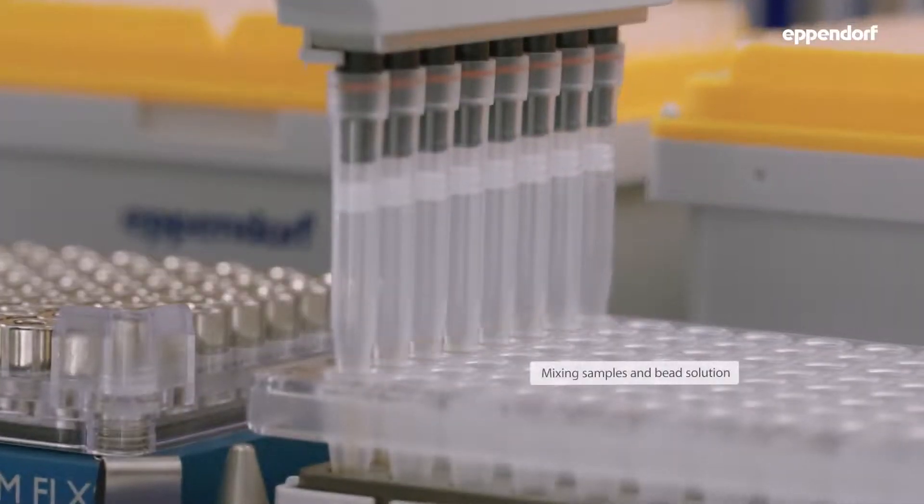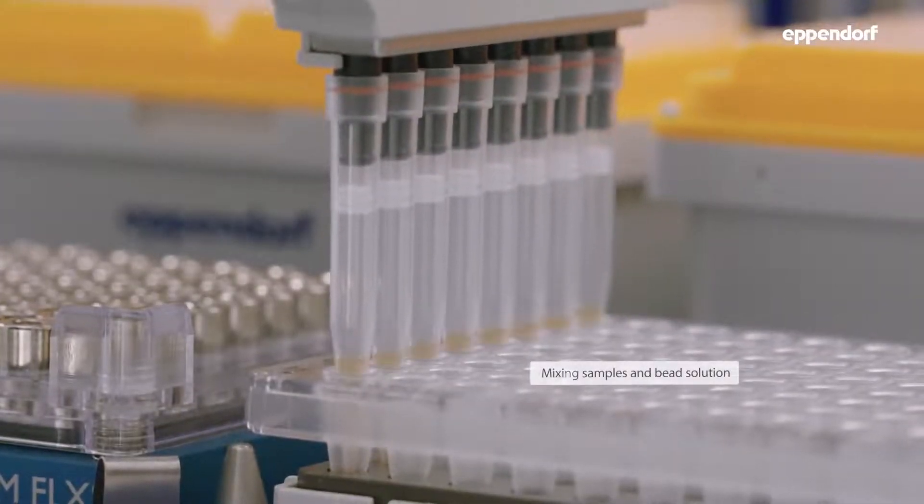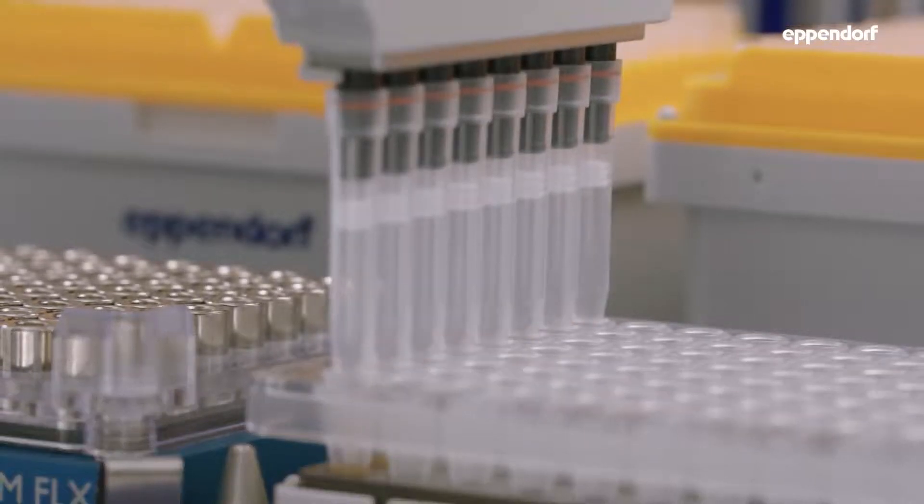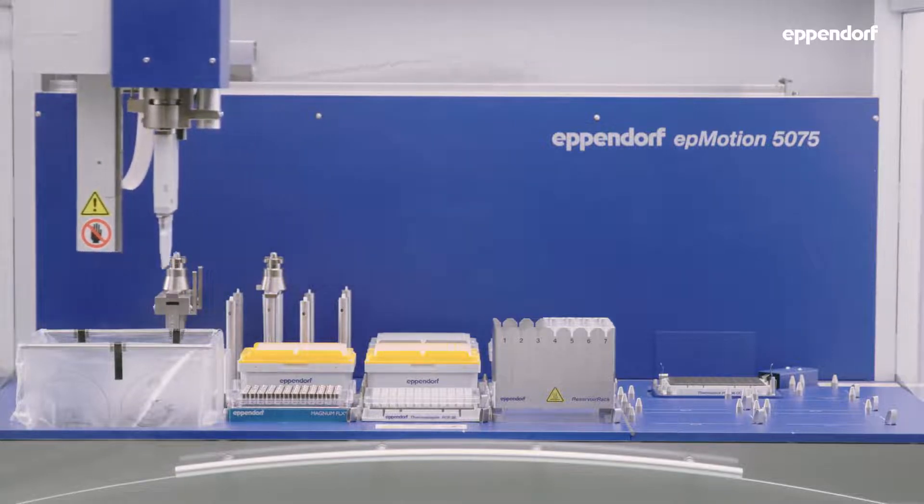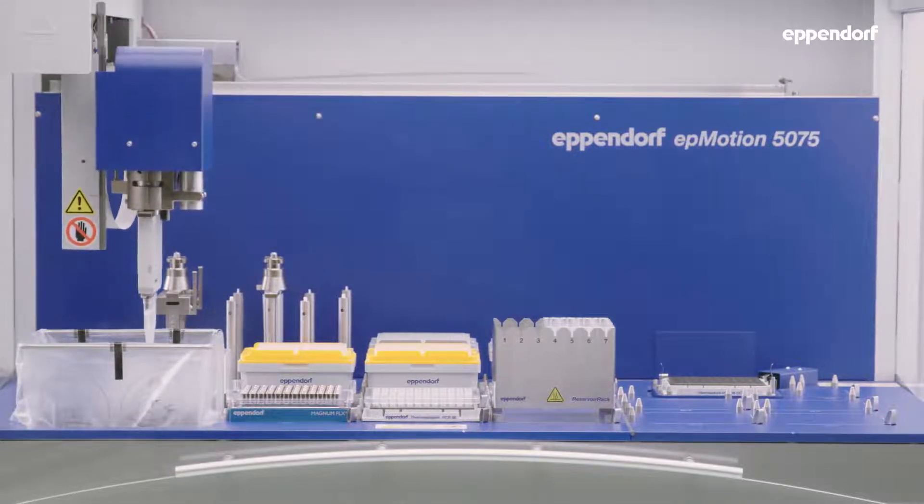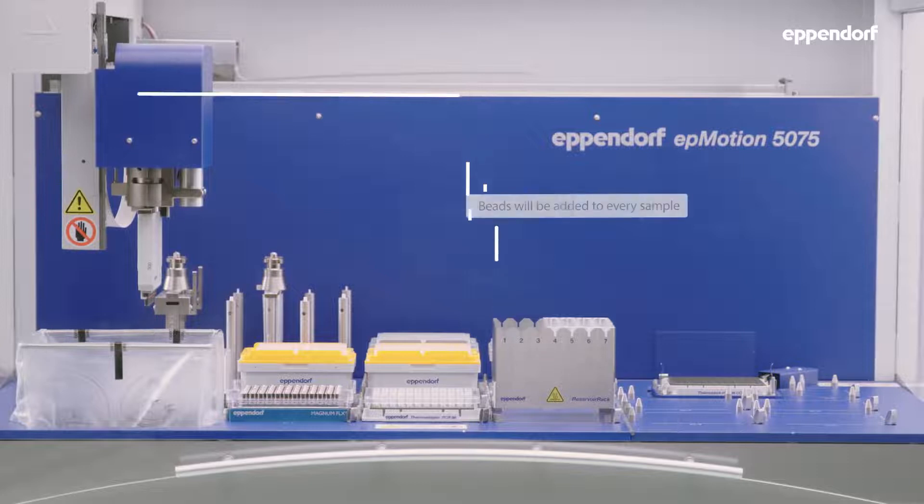After adding beads to the sample, both components are mixed in the pipette tip to allow proper binding of the sample to the beads. This process is then repeated for every sample.